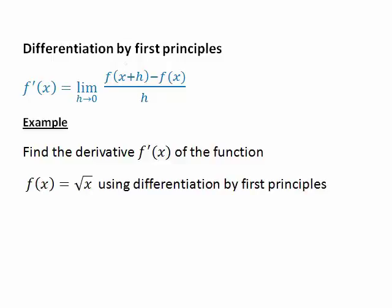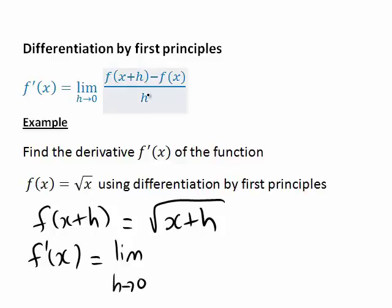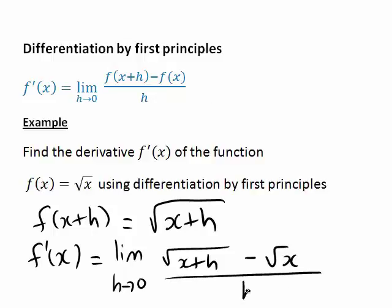First of all, we need to work out f(x+h). Since f(x) is just the square root of x, f(x+h) will be the square root of x plus h. So now let's put this information into our formula: f'(x) will be the limit as h approaches 0 of the square root of x plus h minus the square root of x, divided by h.